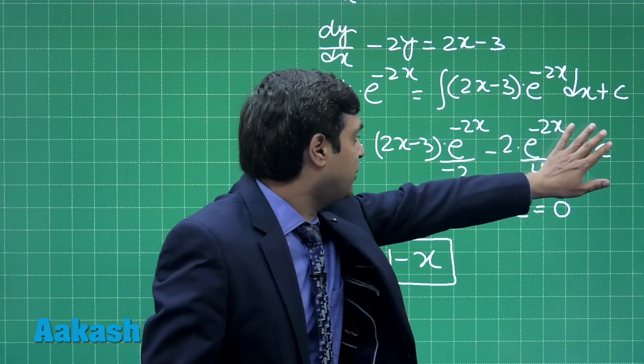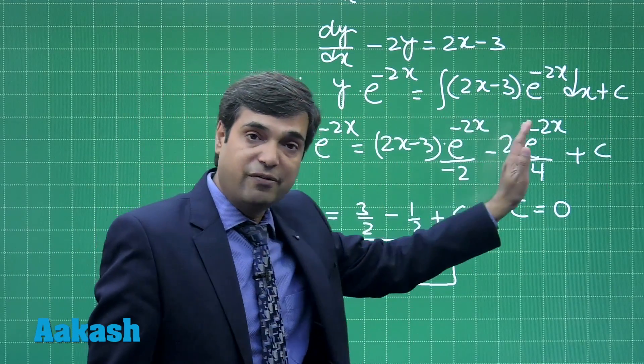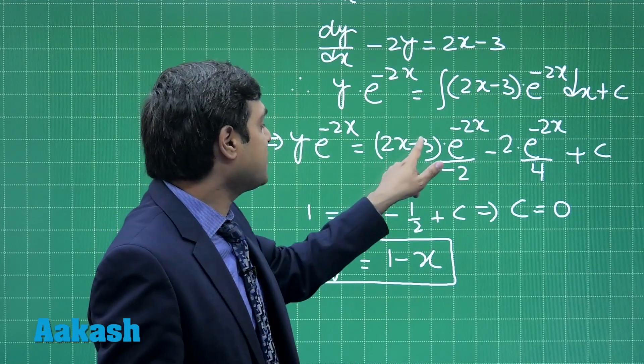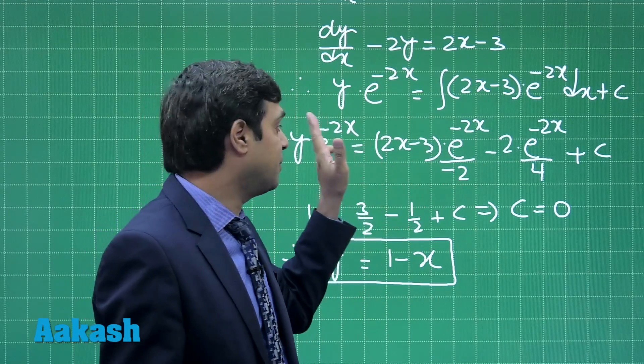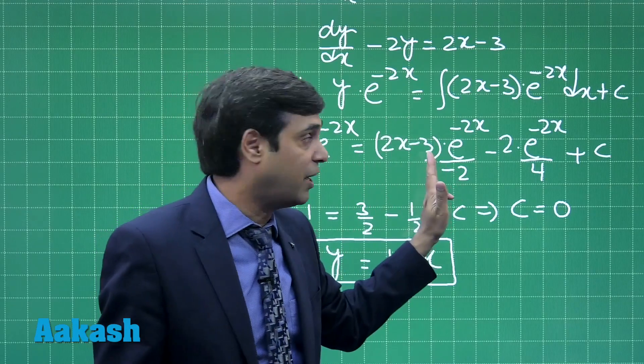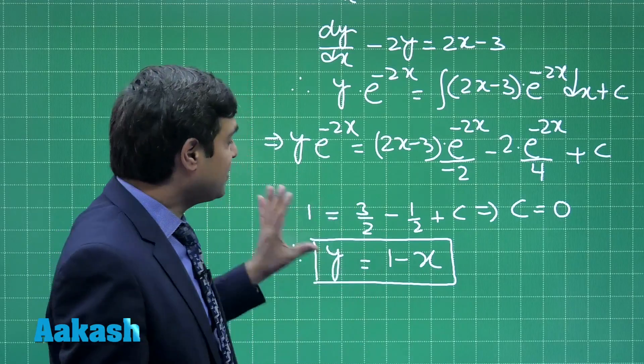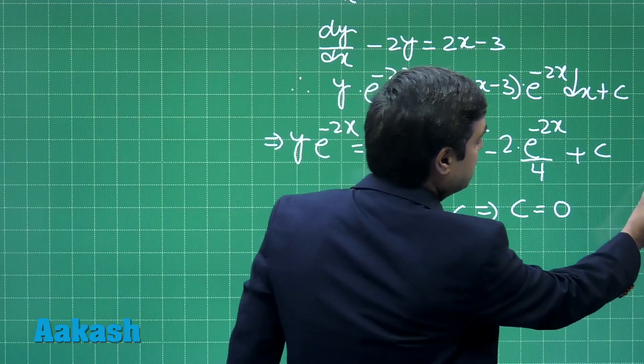Clearly we get y is equal to 1 minus x as the function. When we obtain c equals 0, this is cancelled, then later we can divide by e^(-2x) to get y equals (2x minus 3) upon minus 2, that is simply minus x plus 3/2 minus 1/2, which is 1 minus x. This is the required function given to us.